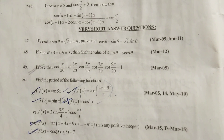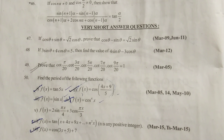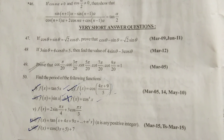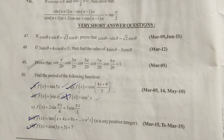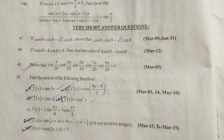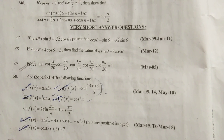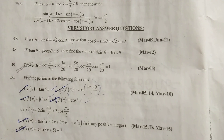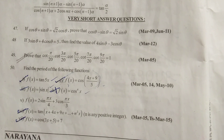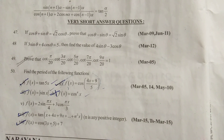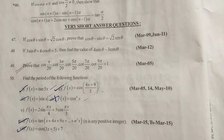cos(θ) + sin(θ) equal to √2·cos(θ). Now cos(θ) − sin(θ) equal to √2·sin(θ). 3·sin(θ) + 4·cos(θ) equal to 5. Find the value of 4·sin(θ) − 3·cos(θ).